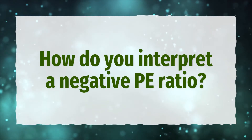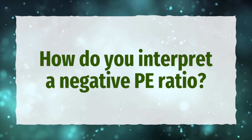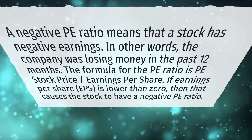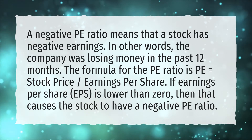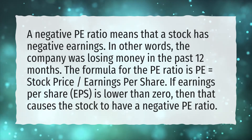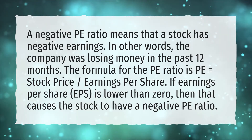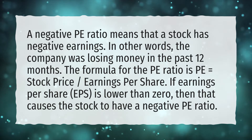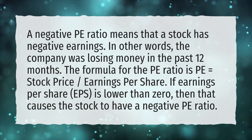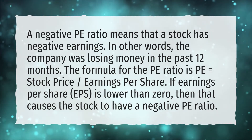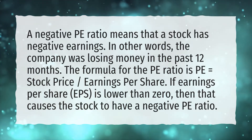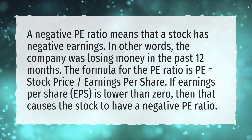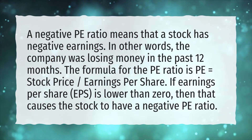How do you interpret a negative P-E ratio? A negative P-E ratio means that a stock has negative earnings. In other words, the company was losing money in the past 12 months. The formula for the P-E ratio is: P-E equals stock price divided by earnings per share.